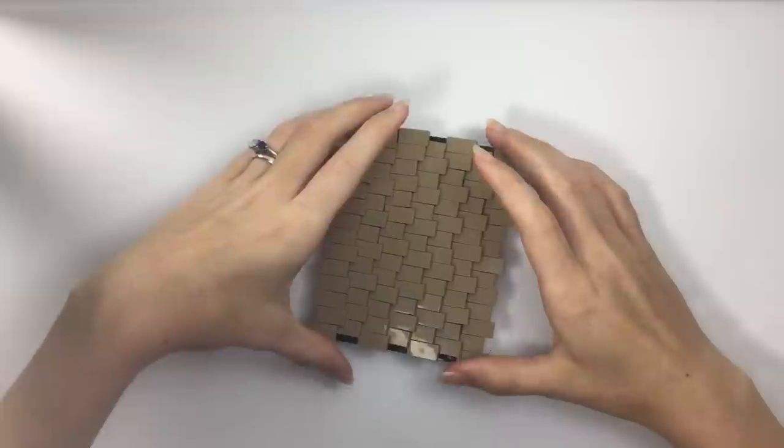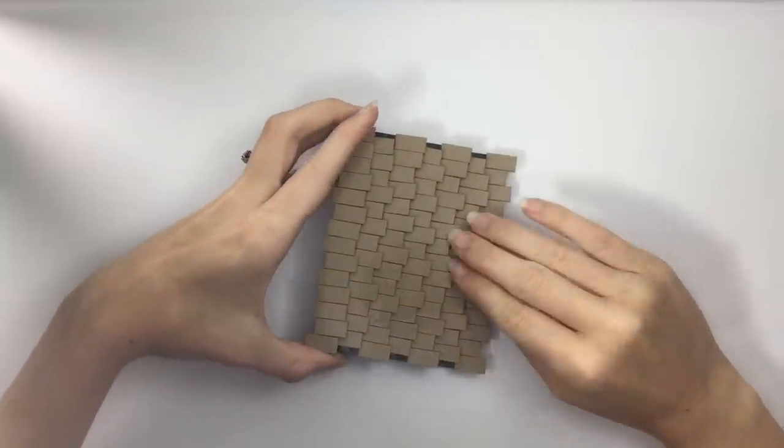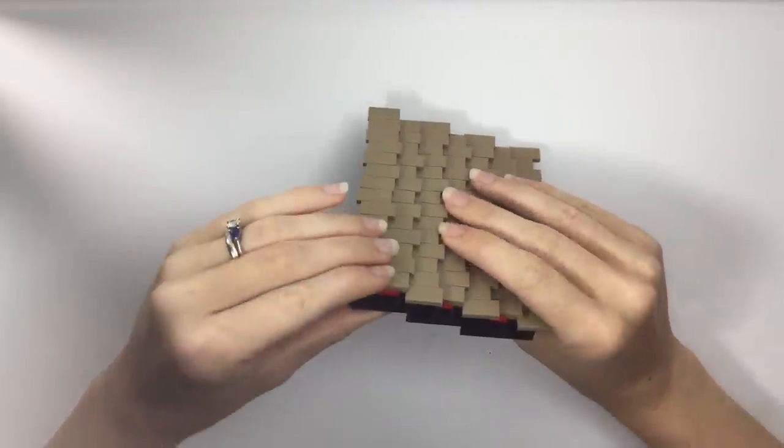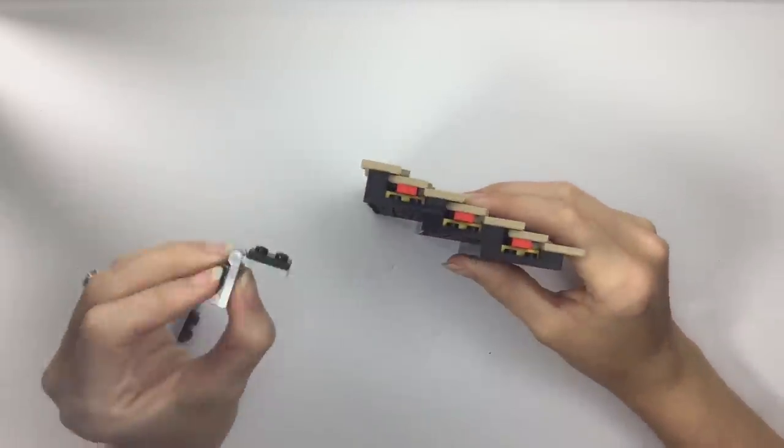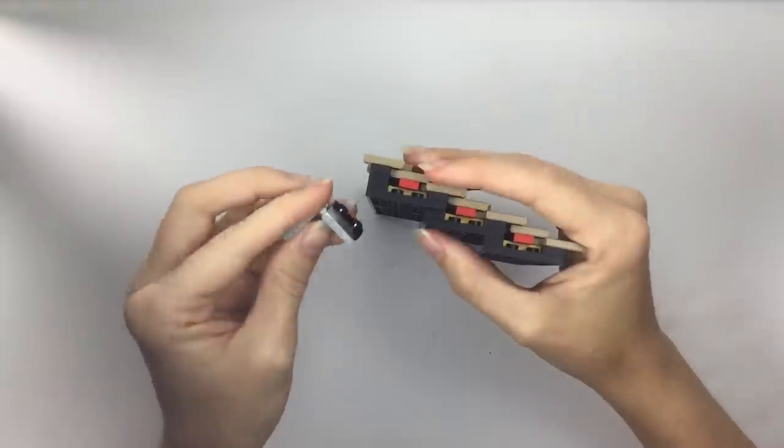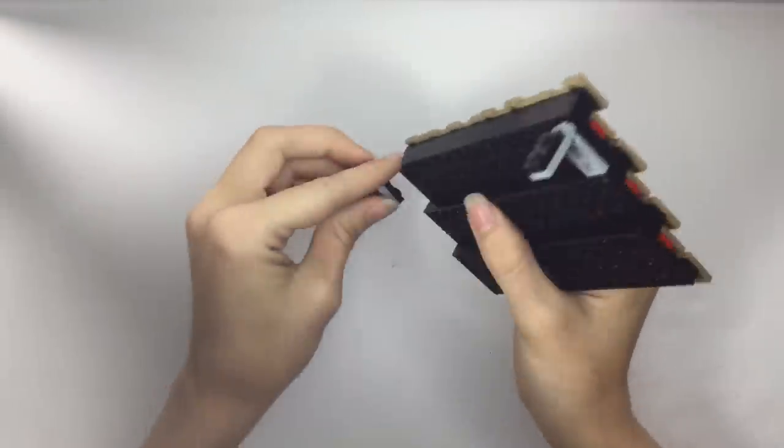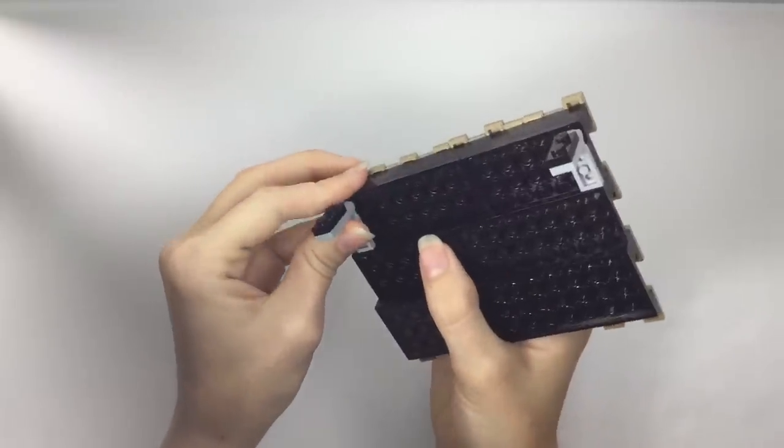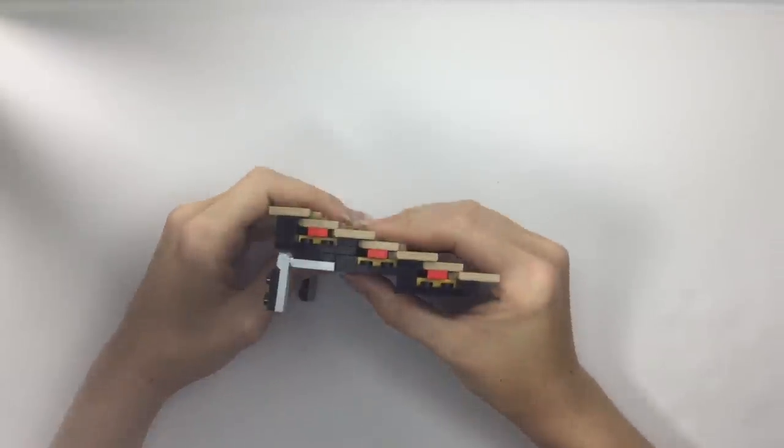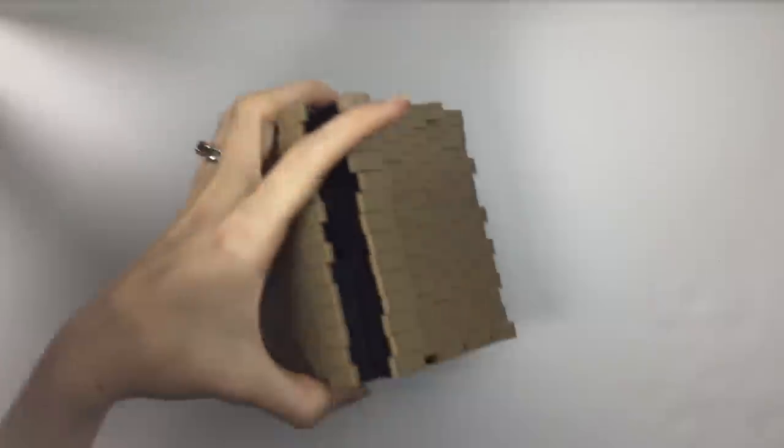So now that we've placed all of our tiles, the next step is to join this half of the roof to the other. In order to do that, we take standard gray hinges with a plate on top of them and connect them to either side of the roof. And that is going to give you this effect.